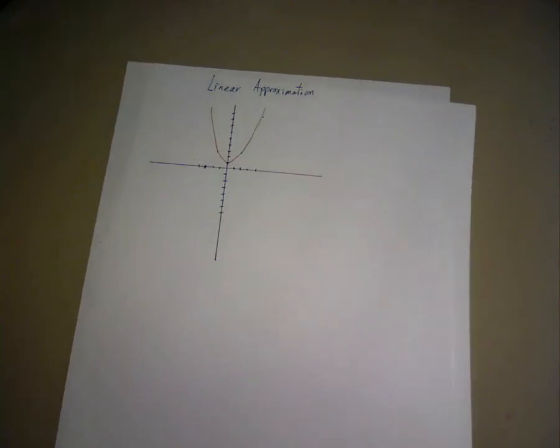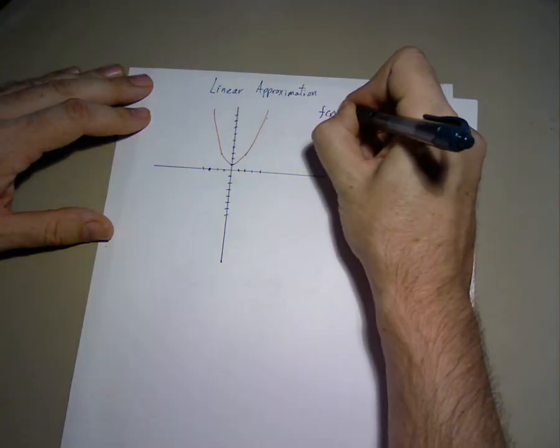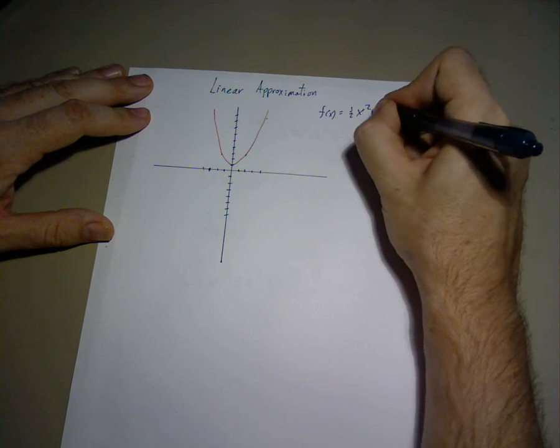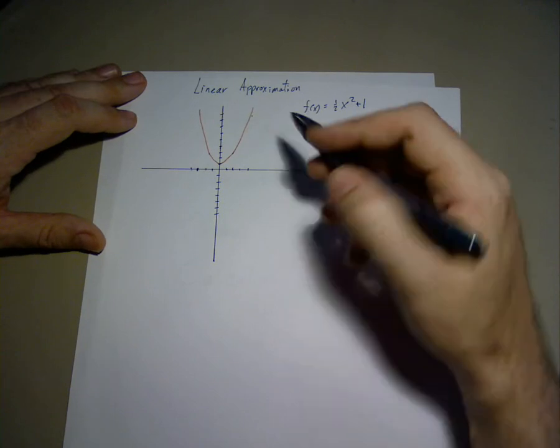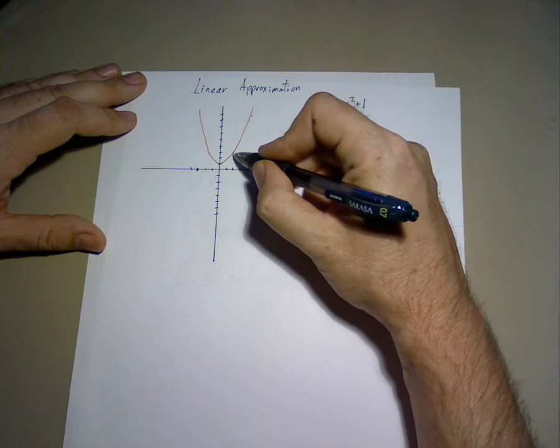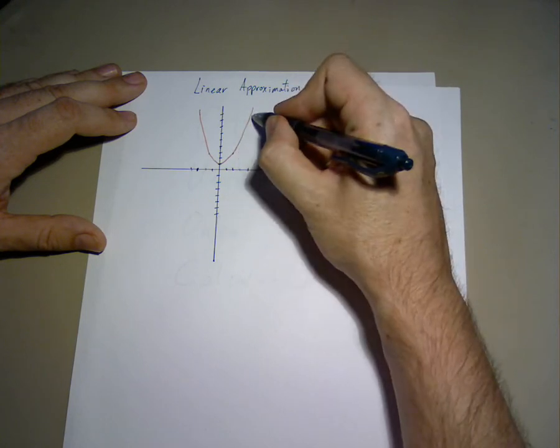We start with the function f of x equals one half x squared plus one, corresponding to a diagram much like this. We want to find the tangent line to this point and this point,